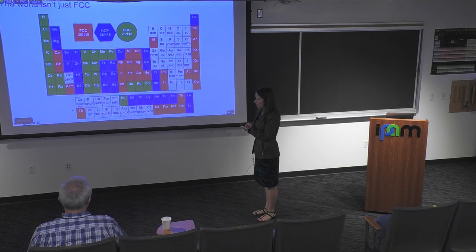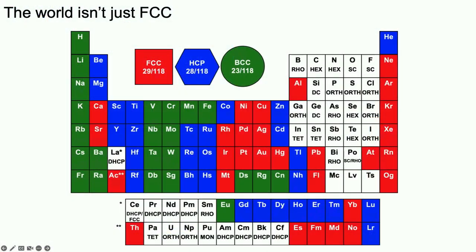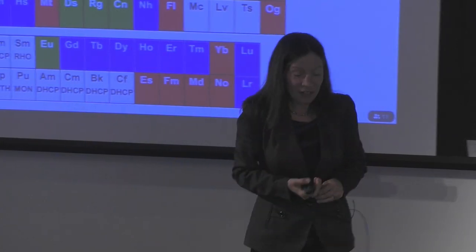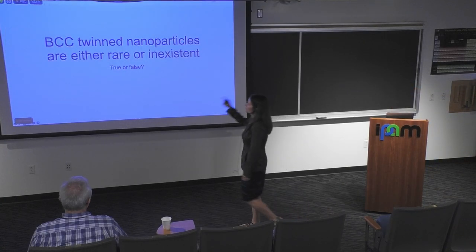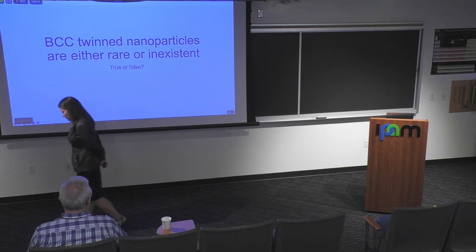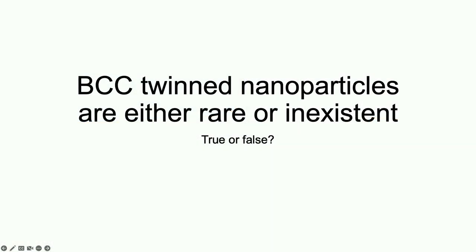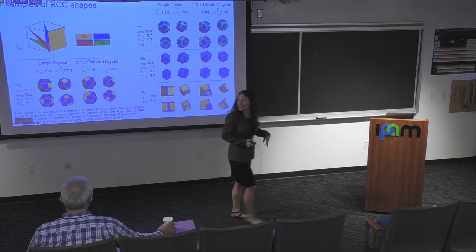Going back to our periodic table — while we were working on this, COVID hit and we were all home. The project we decided to do was look back at the periodic table and ask ourselves: we figured out twinning for HCP, twinning for FCC is well known — what about BCC? BCC twin nanoparticles are either rare or inexistent. As far as I know they have never been reported. Is that reasonable? There's twinning everywhere in the world, in all sorts of nanoparticle systems, and we've been really scratching our heads on that.